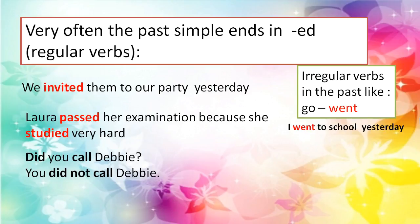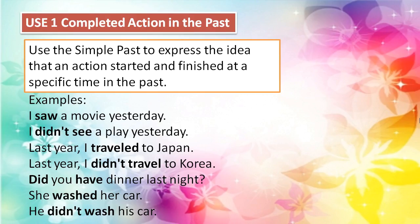Note that irregular verbs in the past, like go — went: I went to school yesterday. We use the simple past in completed actions. Use the simple past to express the idea that an action started and finished at a specific time in the past. Highlight the specific time.